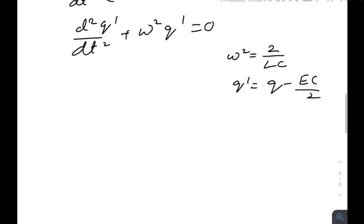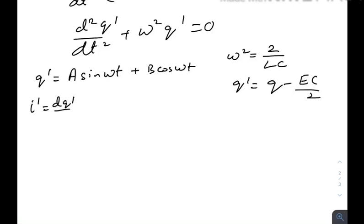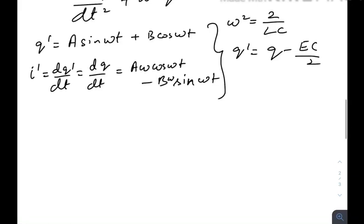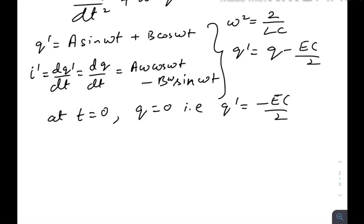The general solution is: q' = A·sin(ωt) + B·cos(ωt). The derivative i' = dq'/dt = dq/dt equals A·ω·cos(ωt) minus B·ω·sin(ωt). These are the two required equations. Now applying boundary conditions: at t equals zero, q equals zero, so q' must equal minus EC/2. Using this in the general solution gives: minus EC/2 equals zero plus B, so B equals minus EC/2.